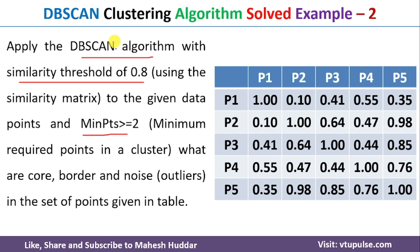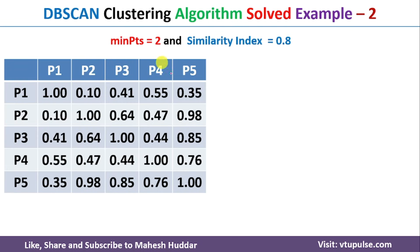Given this particular dataset, we need to find the core, border, and noise points, and finally we need to create the clusters. The minimum number of points in each cluster should be two, and the similarity index threshold is 0.8 — meaning the minimum similarity index should be 0.8.